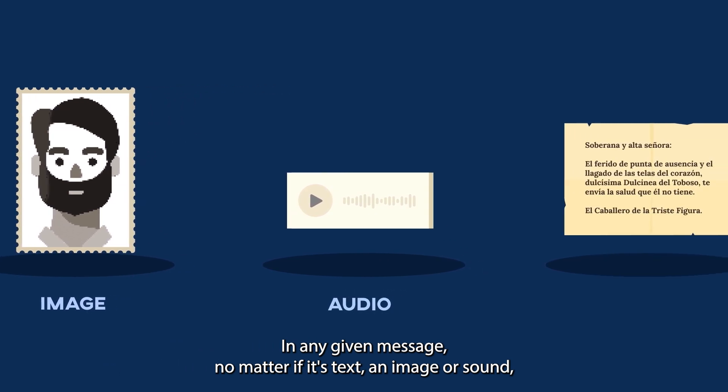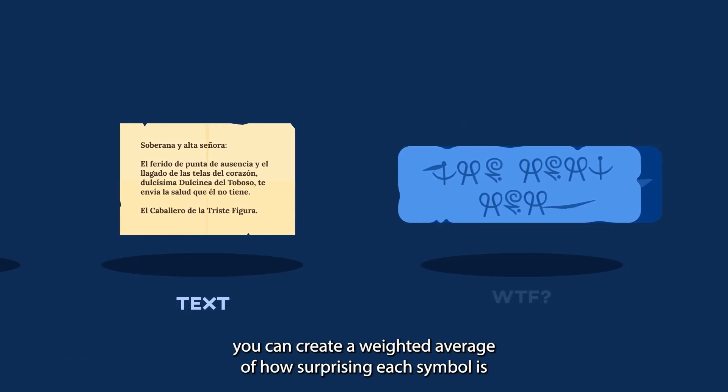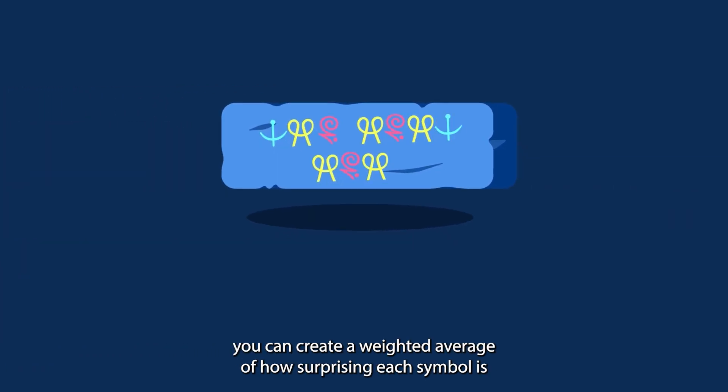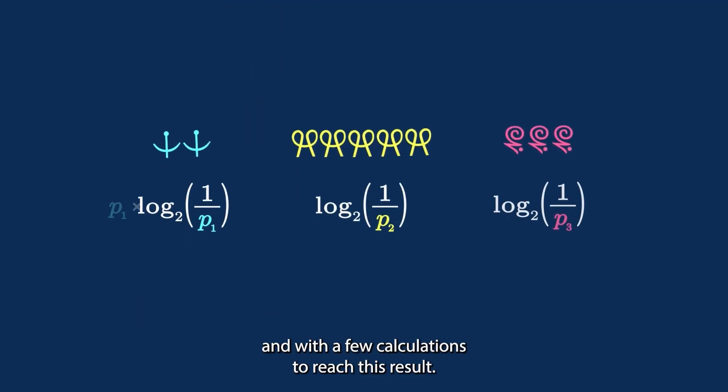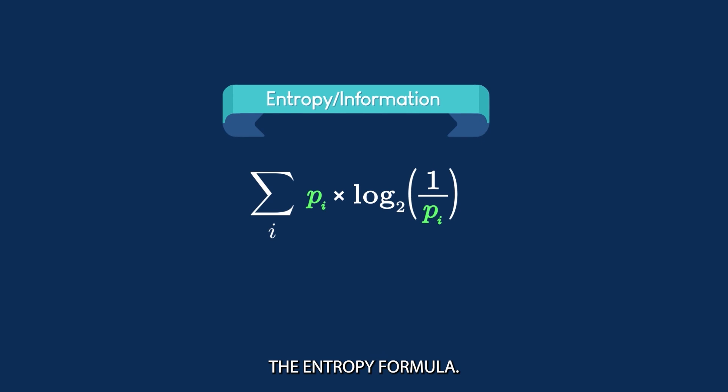In any given message, no matter if it's text, an image, or sound, you can create a weighted average of how surprising each symbol is, and with a few calculations you reach this result: the entropy formula.